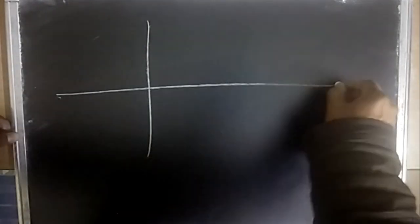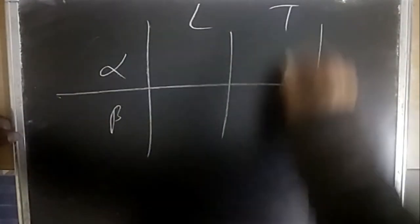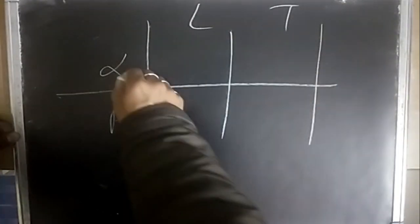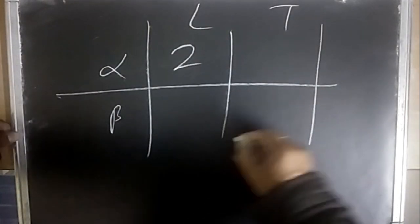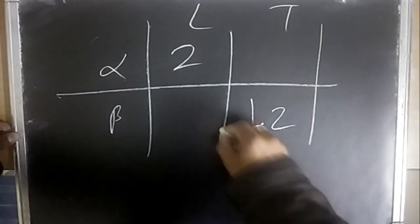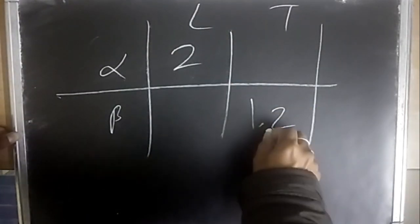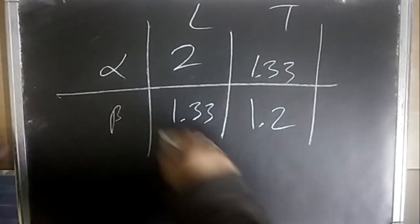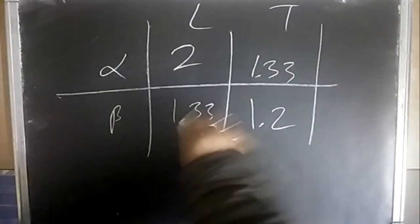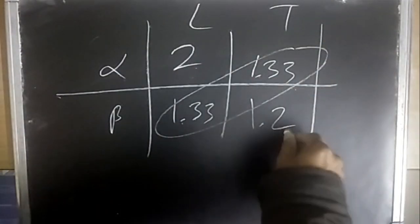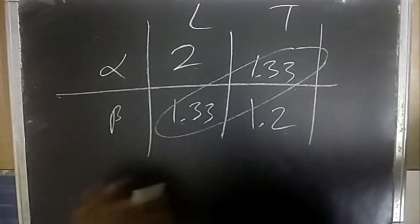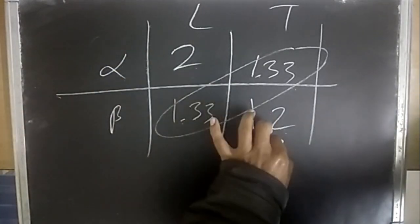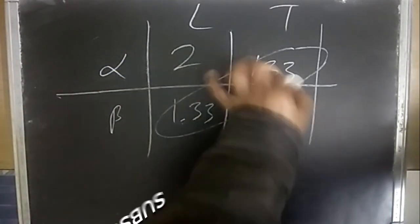Standard values for α and β: for laminar flow, α = 2 and β = 1.33; for turbulent flow, α = 1.2 and β = 1.33. Remember: start with 2 (laminar α), go to 1.2 (turbulent α), and both flows share β = 1.33.